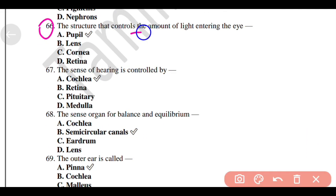The structure that controls the amount of light entering the eye, Option A, Pupil. The sense of hearing is controlled by Option A, Cochlea.